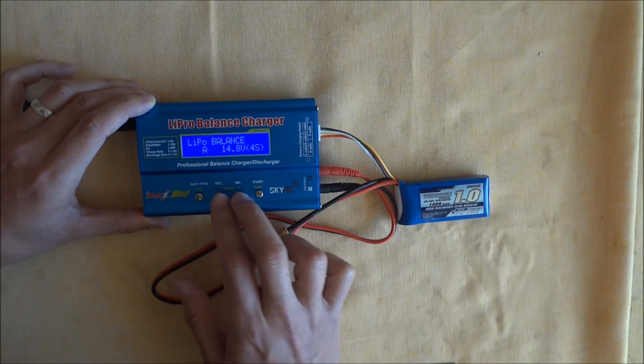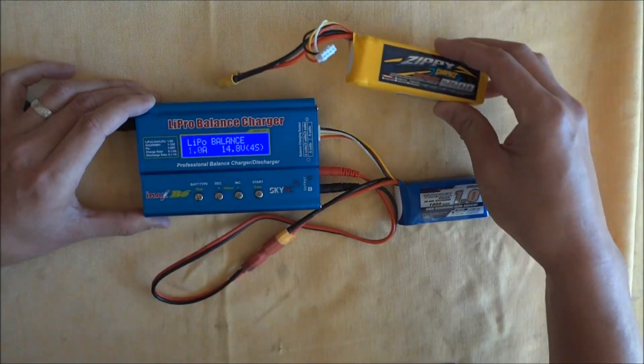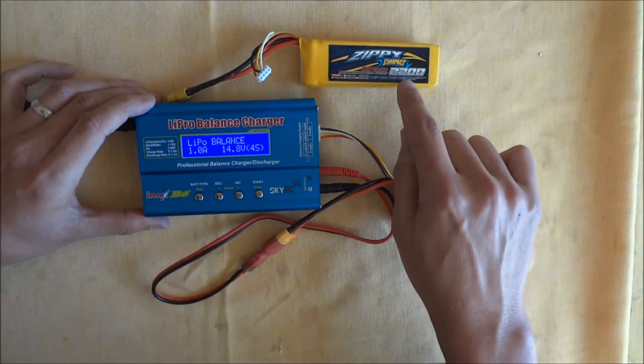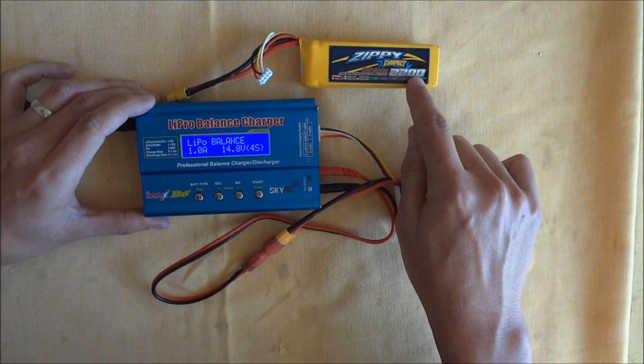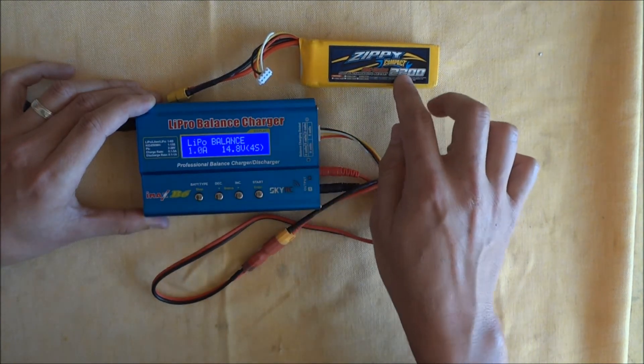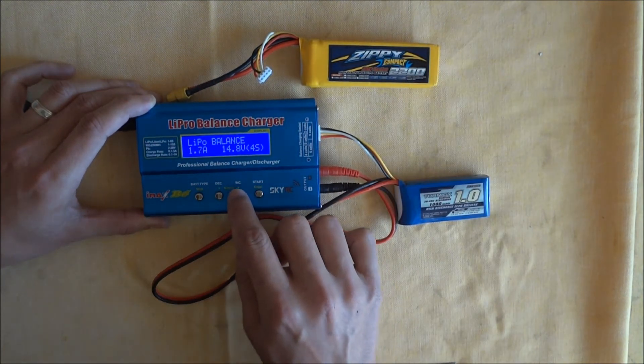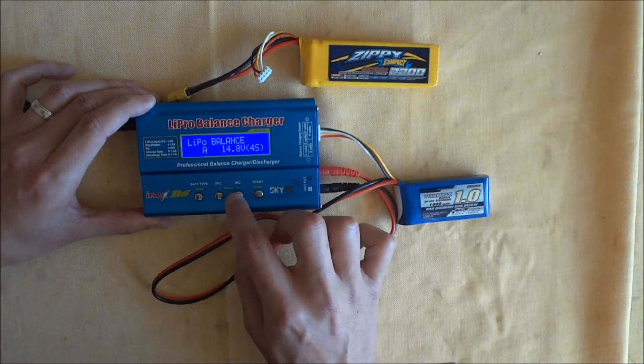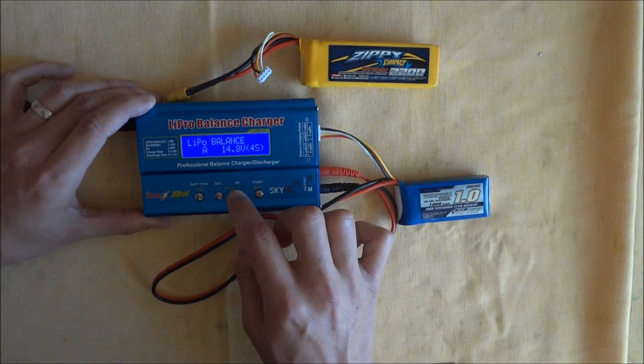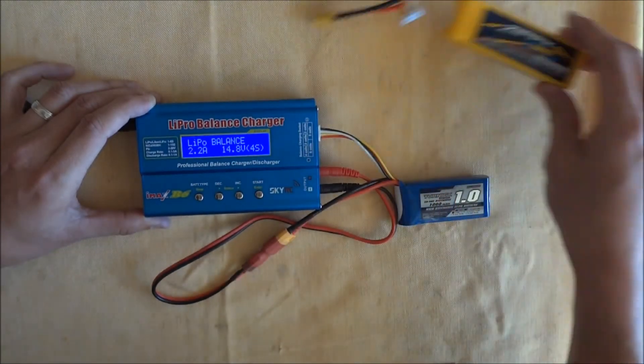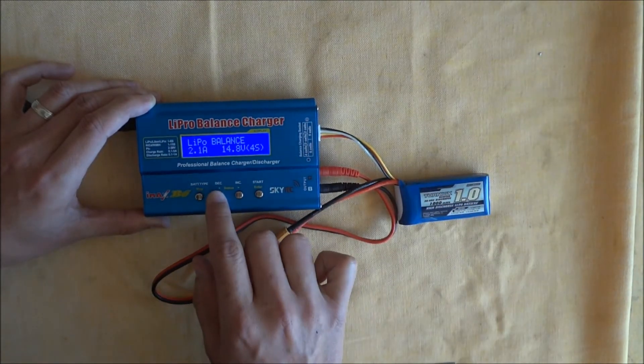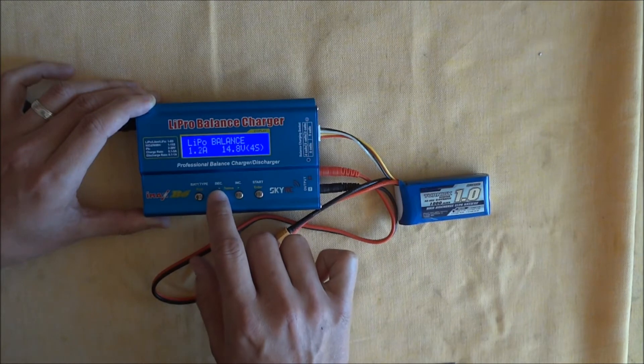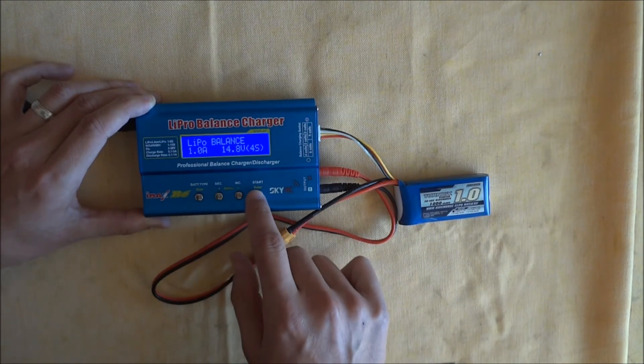You can go left or right. For example, this battery here, this is a 2200 milliampere hour battery. So for that battery, if we needed to charge that, you would increase that three decimal places to 2.2. But for our purpose, we've got a thousand milliampere hour battery. So that's one amp. So one amp, enter.